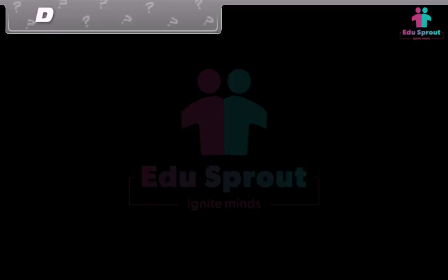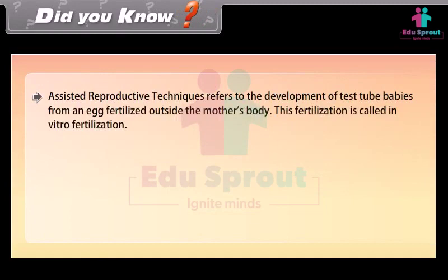Assisted reproductive techniques refer to the development of test tube babies from an egg fertilized outside the mother's body. This fertilization is called in vitro fertilization.